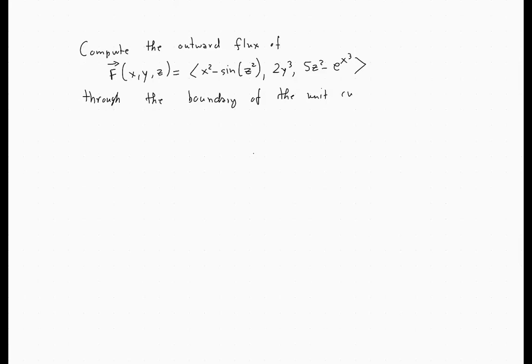So what do we need to keep in mind here in terms of our theory? If we wish to compute the outward flux through the boundary of the domain, that's the same thing as the triple integral of the divergence of f in the interior of that domain.